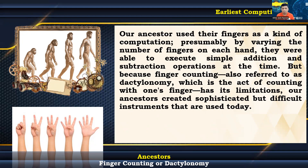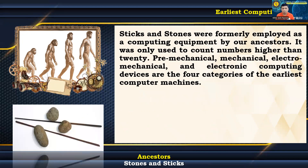But because finger counting — also referred to as dactylonomy, which is the act of counting with one's fingers — has its limitations, our ancestors created sophisticated but difficult instruments still used today. Sticks and stones were formerly employed as computing equipment by our ancestors, and were used to count numbers higher than 20.